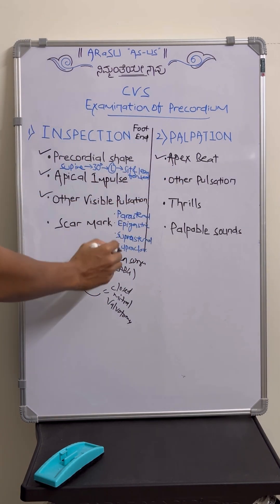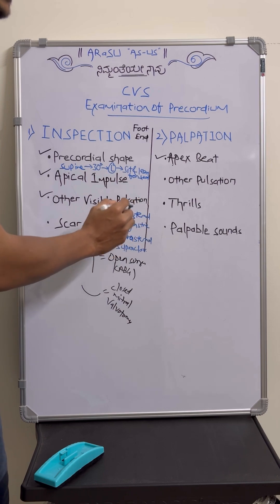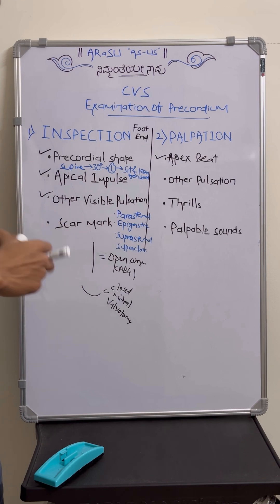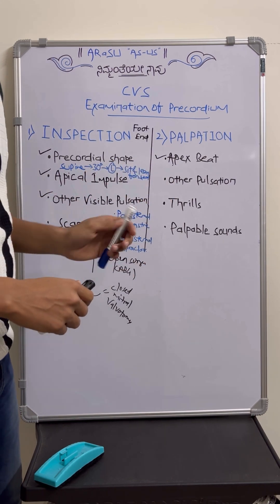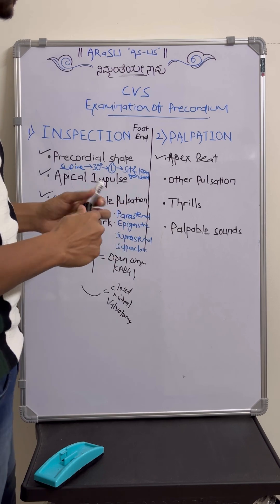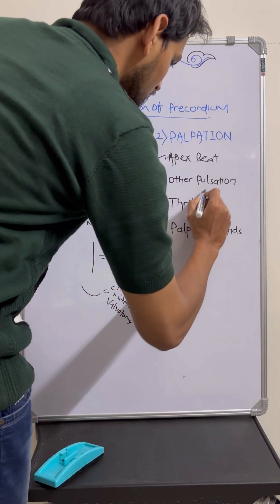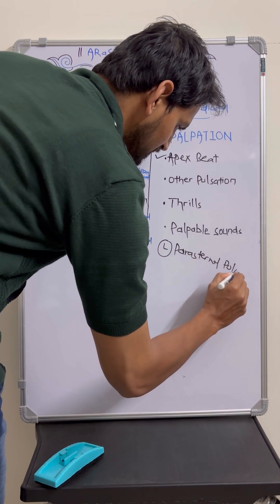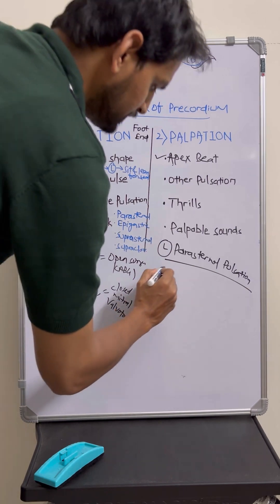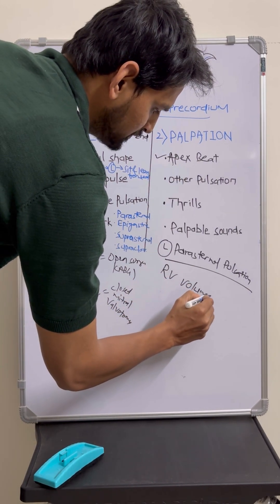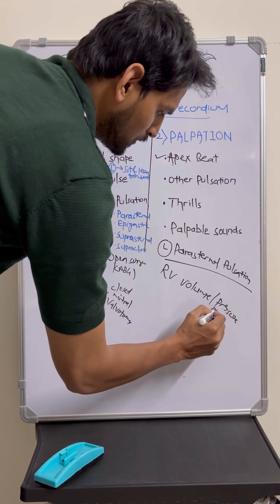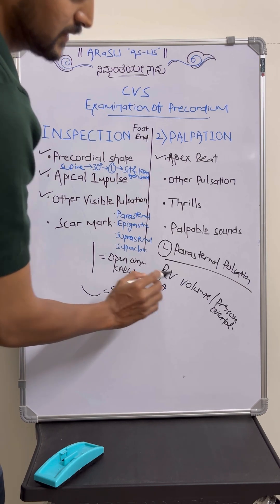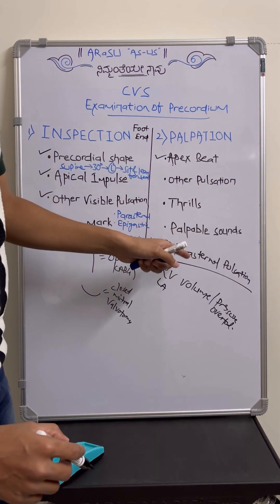Then comes other pulsations. Among these, the left parasternal pulsation is very important. We look for parasternal heave — its presence is indicative of right ventricular volume or pressure overload. Another reason is massively enlarged left atrium. These two are reasons for left parasternal heave or left parasternal lift, together considered as left parasternal pulsation.